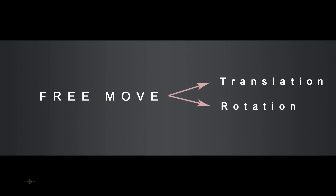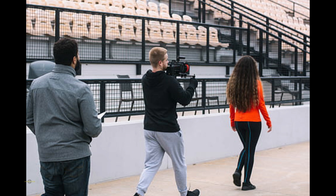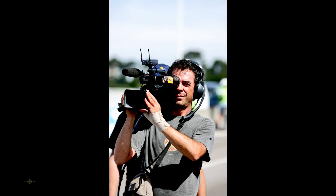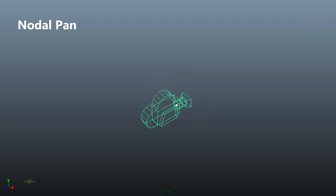The free move camera will have both rotation and translation values. For example, look at this picture — the cameraman is walking with the camera, so the camera is not in a static position; it is moving from its starting position. A handycam is an example of this kind of camera movement, which we consider a free move camera.